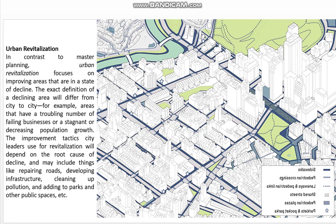Urban revitalization: in contrast to master planning, urban revitalization focuses on improving areas that are in a state of decline. The exact definition of a declining area will differ from city to city — for example, areas that have a troubling number of failing businesses or a stagnant or decreasing population growth. Improvement tactics city leaders use will depend on the root cause of decline and may include repairing roads, developing infrastructure, cleaning up pollution, and adding parks and other public spaces.